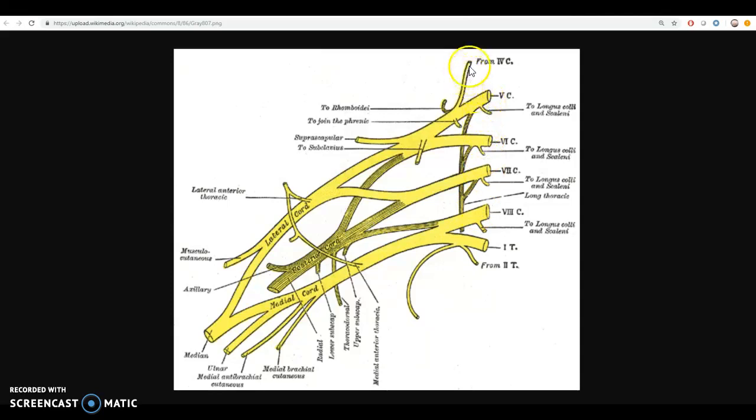There's even a little contribution from nerve 4, 5, 6, 7, and 8. Those are the cervical C through 8, C4 through 8, and then the first thoracic nerve.